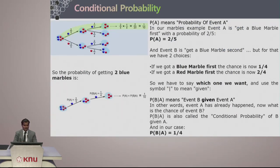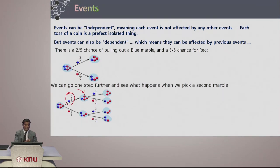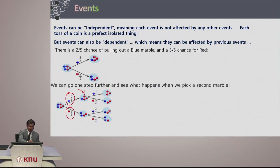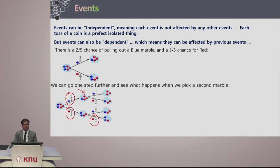We can consider these as individual events, but each event depends on the previous event. If you already picked up a blue marble, the second time you pick up a blue marble the probability changes to 1 out of 4. Likewise, if you pick up a red marble in the first instance, picking up a red marble the second time changes the probability to 2 out of 4. You can see how these events are dependent on one another.